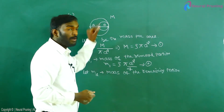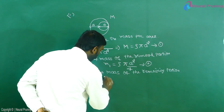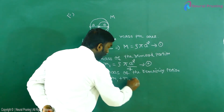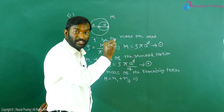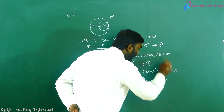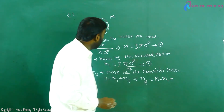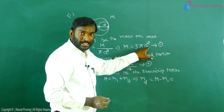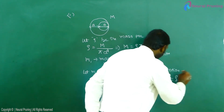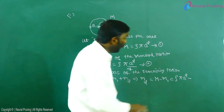How to find the mass of the remaining portion. If total mass m equals m1 plus m2, then m2 equals m minus m1. What is m1? m1 = ρπa²/4.